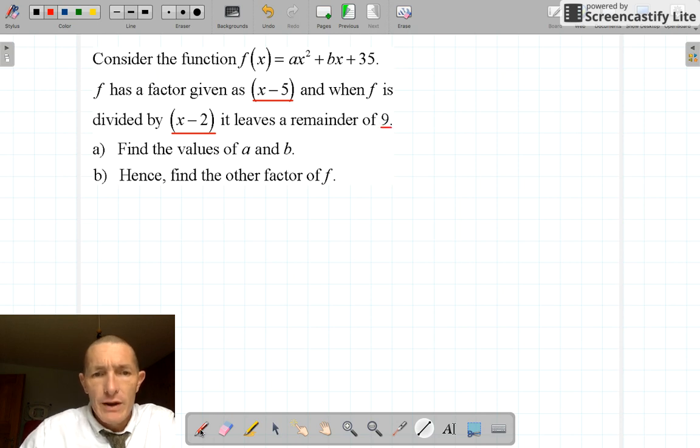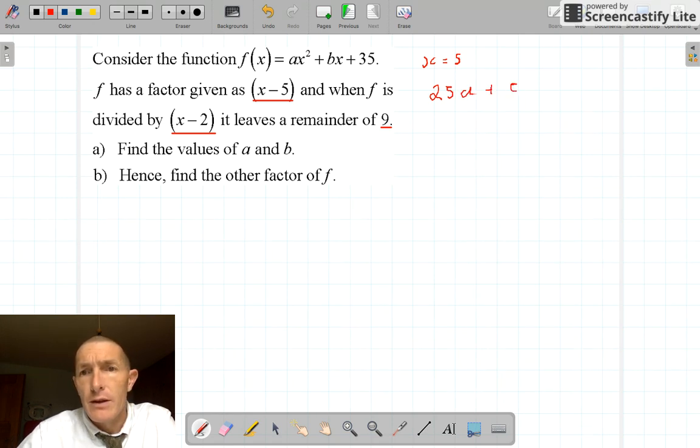Find the values of a and b. So what I need to do is make x equal to 5 to begin with. When I make x equal 5, I know if I substitute this into the equation the answer is 0, because x minus 5 is a factor. So 5 squared is 25, I've got 25a plus 5b